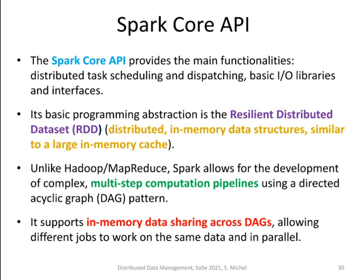For instance, you can filter a data set based on a predicate. If you think about relational algebra, you have operations like projection and selection, and you can construct your application based on the functions provided by the API. You can realize multi-step computation pipelines inside Spark, as opposed to the MapReduce or Hadoop implementation. These resilient distributed data sets can be shared across different computation pipelines, allowing for parallelism and sharing of resources.